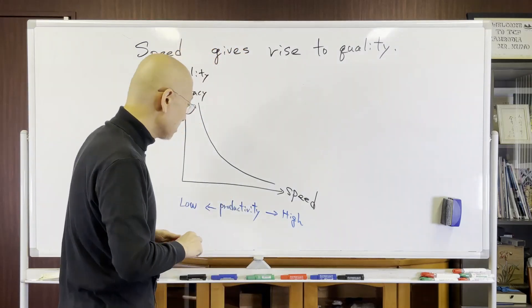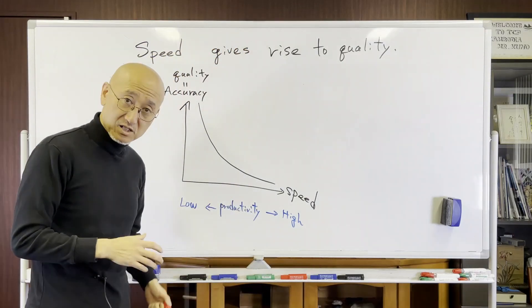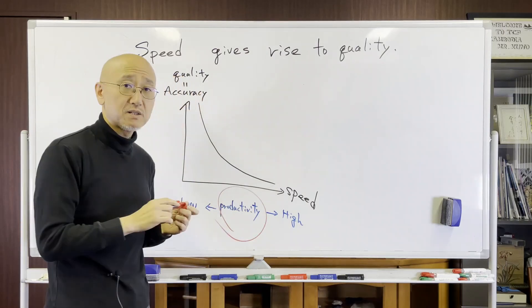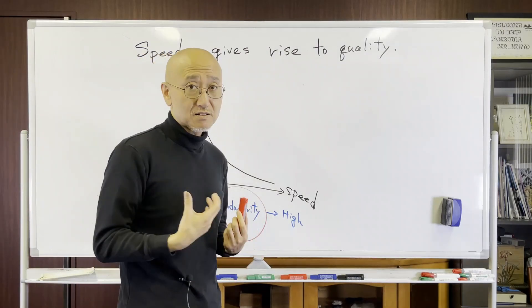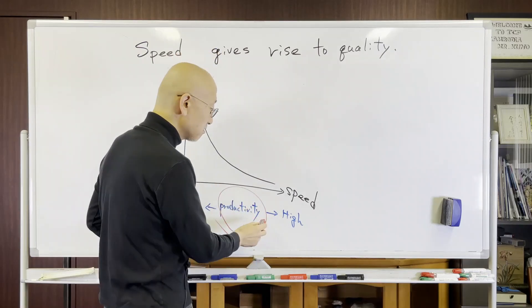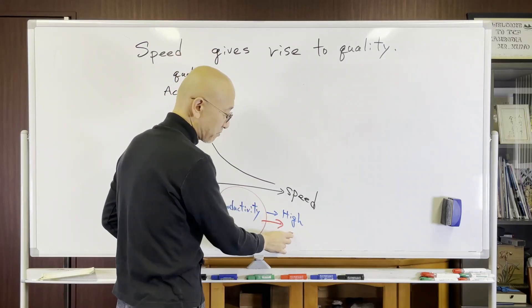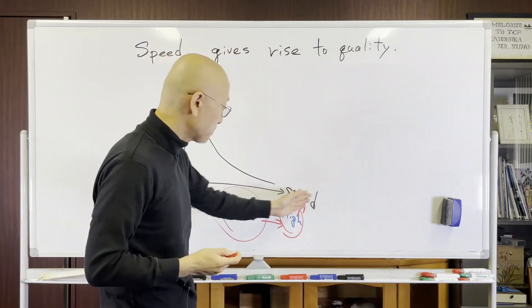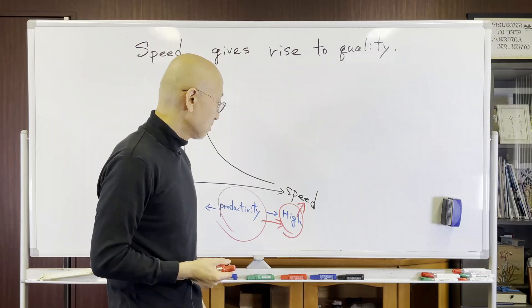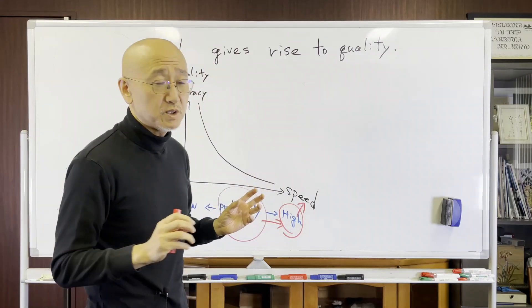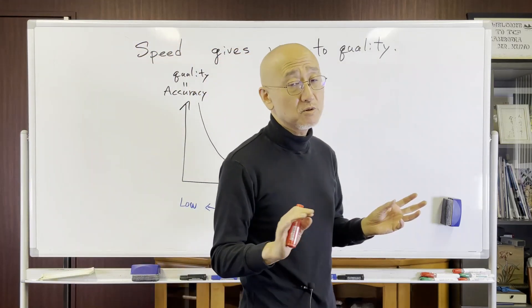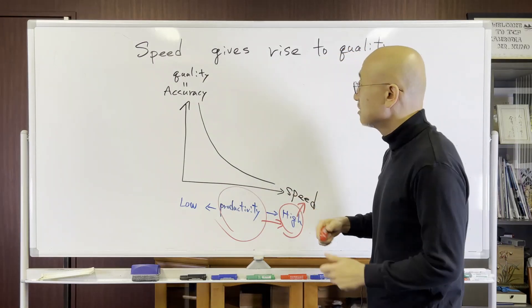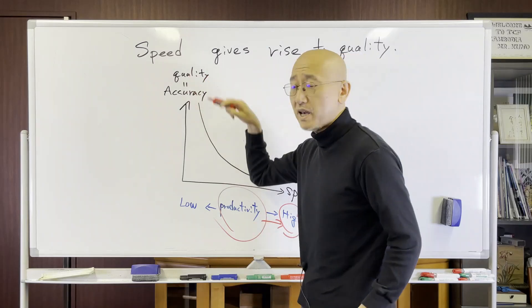However, actually the manager focuses on productivity. They recommend us to increase the productivity. That means they recommend us to increase speed. But there is a conflict between manager's opinion and subordinates' opinion. In general, subordinates think if we increase speed, accuracy or quality may decrease.